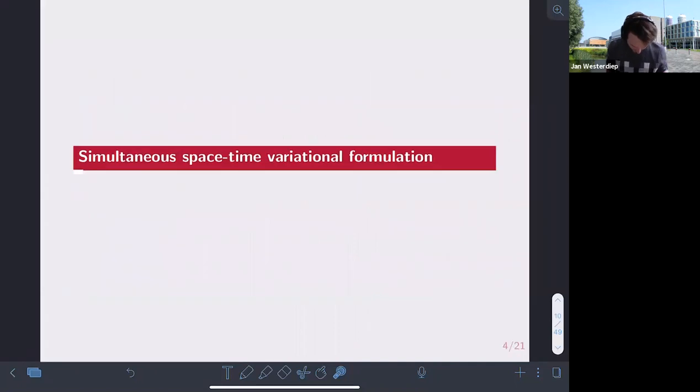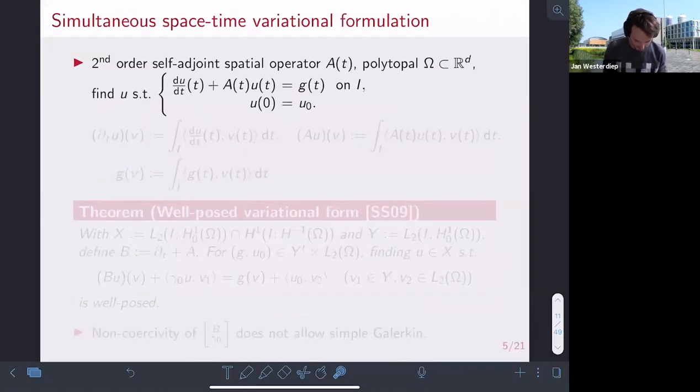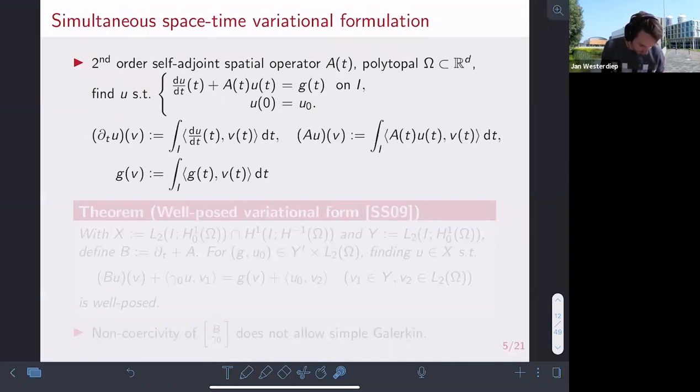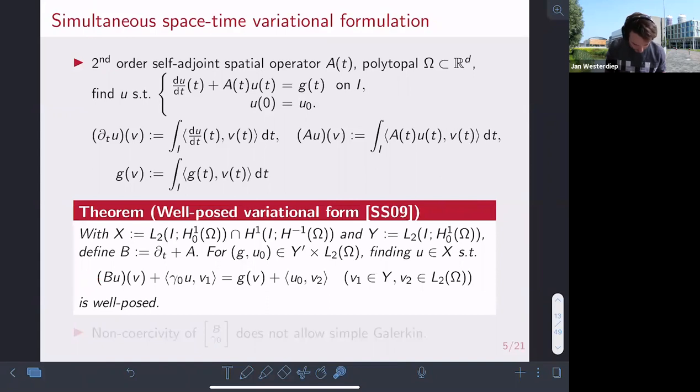All right, so this is the introduction. Let's dive into it. We have a simultaneous space-time variational form. Consider some second-order self-adjoint spatial operator A(t). If you have A(t) equals minus Laplace, then you just get the heat equation back. You have some domain in R^d, and you want to solve this equation. To get a variational form, we define some operators: partial_t, A, and a functional g. This allows us to define a variational form. It is well-posed on these two Bochner spaces. On our trial side, we have the intersection of two Bochner spaces, and on the test side we have another Bochner space. This is well-posed, so you can expect a unique solution for any suitable input. But the problem, as I alluded to before, is that this operator is non-coercive. Therefore, we can't do a simple Galerkin.